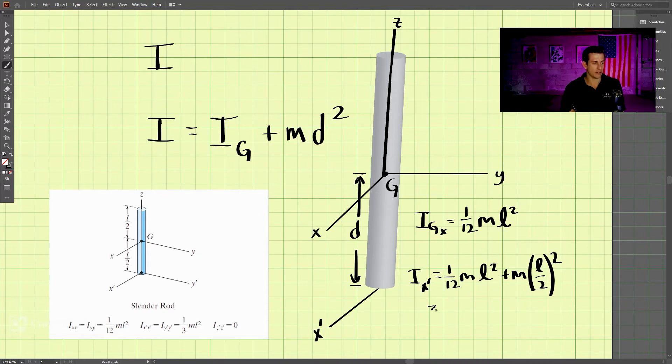Let's simplify this. We have 1/12 ml squared here. And after we expand this, we have ml squared over 4. So we have 1/4 plus 1/12. I believe that comes out to be 1/3 ml squared.